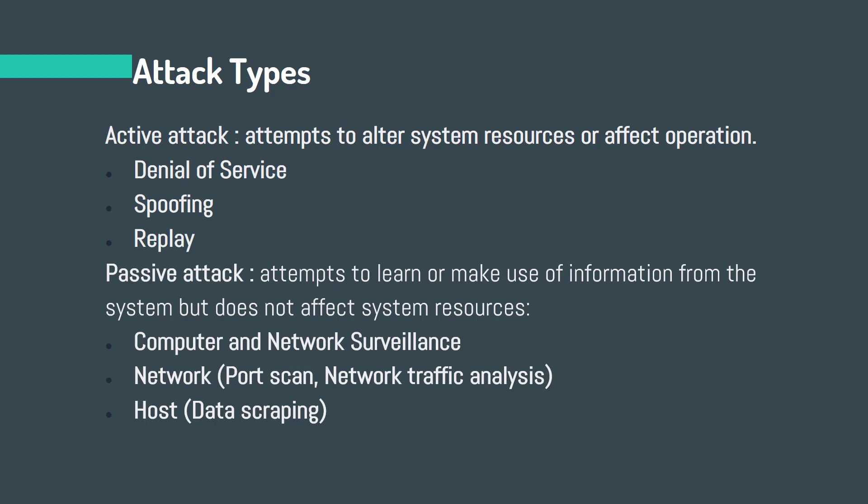For example, some forms of network and computer surveillance are types of passive attacks on a network. Port scanning and traffic analysis are very probable methods for performing passive attacks. Therefore it is necessary to protect all secret and vital information of a company at both the network level and the host level.